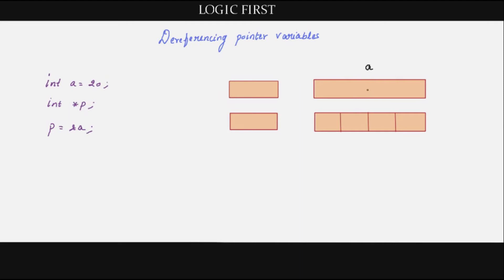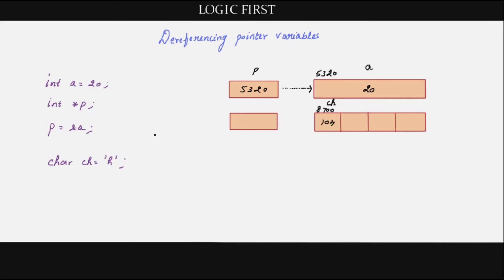The variable 'a' has the value of 20; the address of this variable is 5320. We have a pointer for that variable, so 5320 is stored in 'p' and the pointer is pointing to variable 'a'. Say we also have a character variable called 'ch' and we are assigning the value 'h' to it. A space will be allocated for the character variable in memory — say the address is 8700. We declare a character pointer: char *cp, and directly assign the address of 'ch' to this pointer.